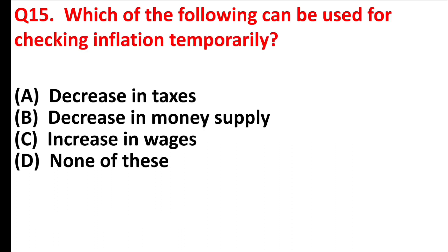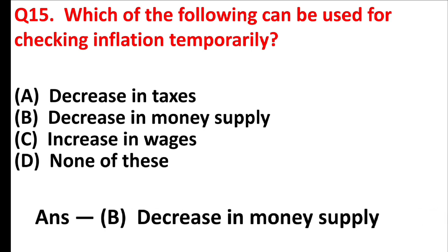Which of the following can be used for checking inflation temporarily? Answer is option B: decrease in money supply.